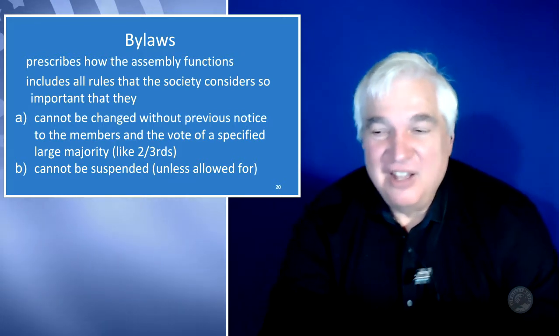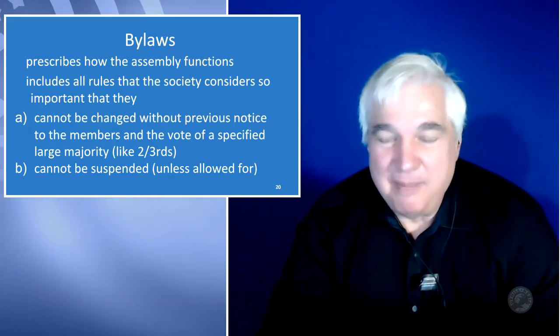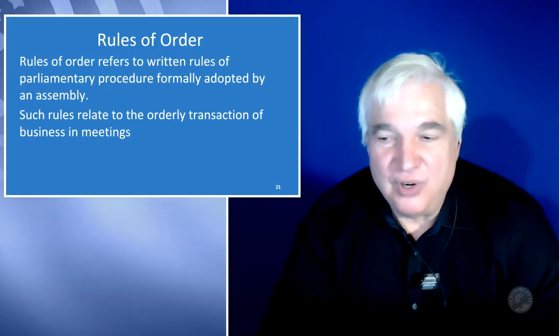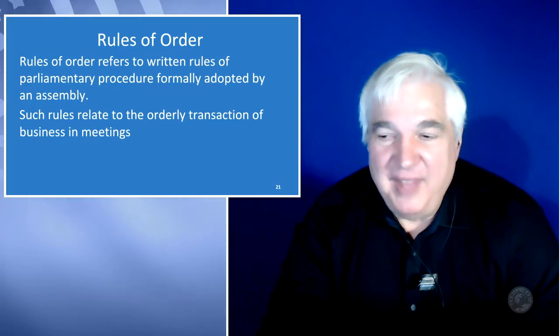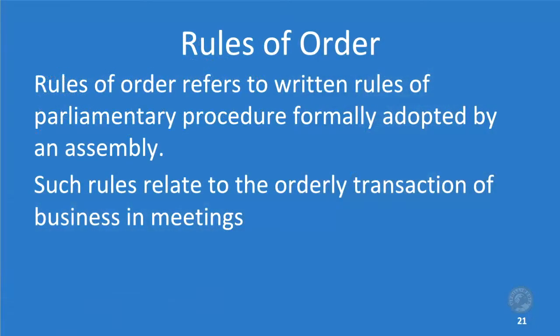Underneath bylaws are rules of order, which refer to written rules of parliamentary procedure formally adopted by an assembly. Such rules relate to the orderly transaction of business in meetings.